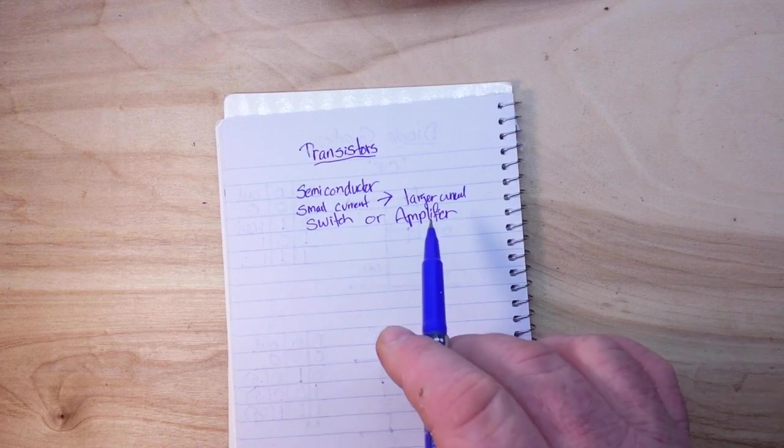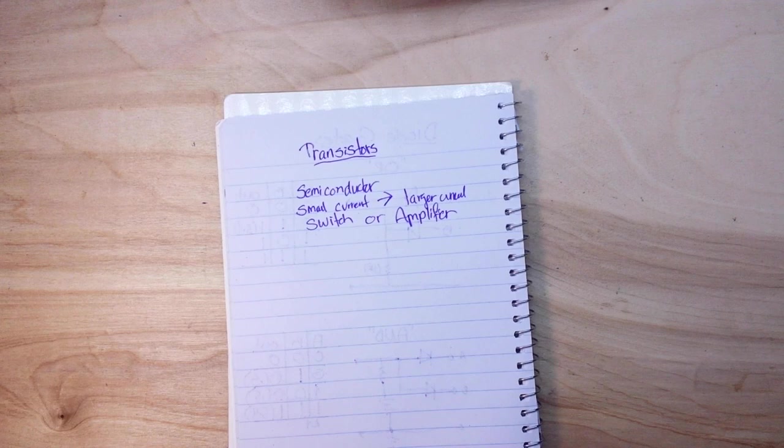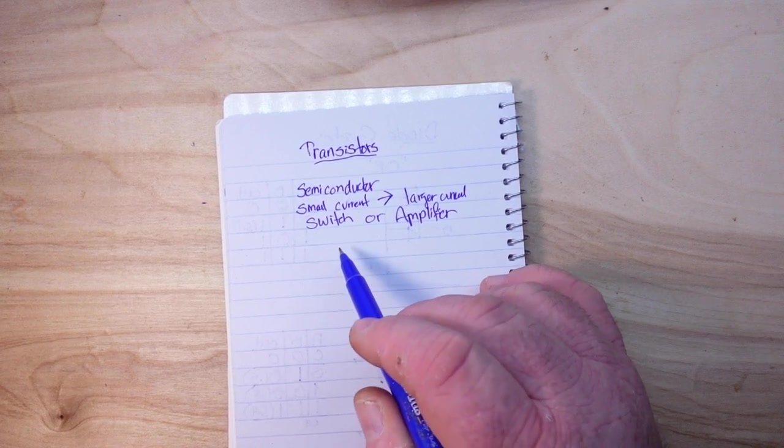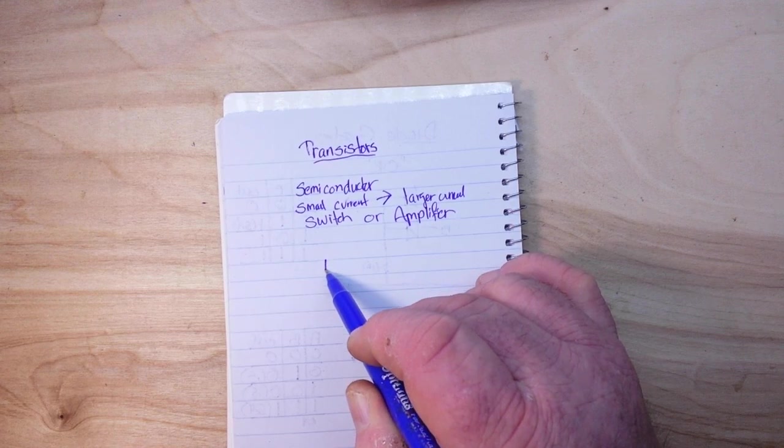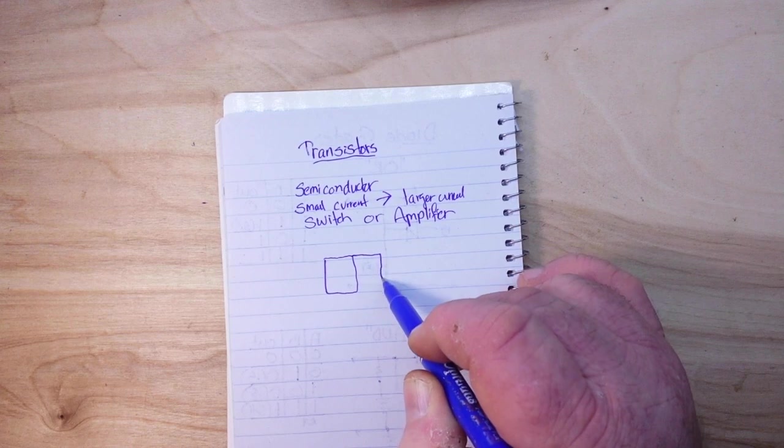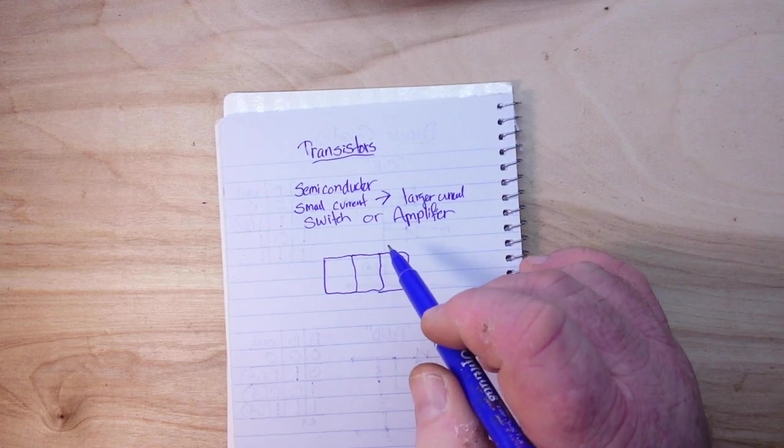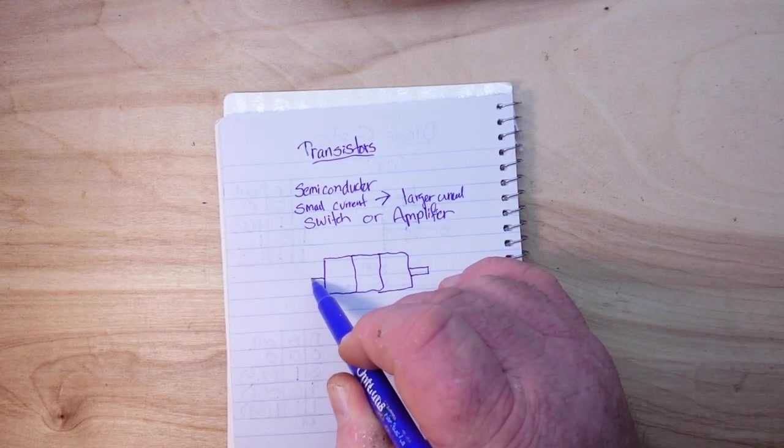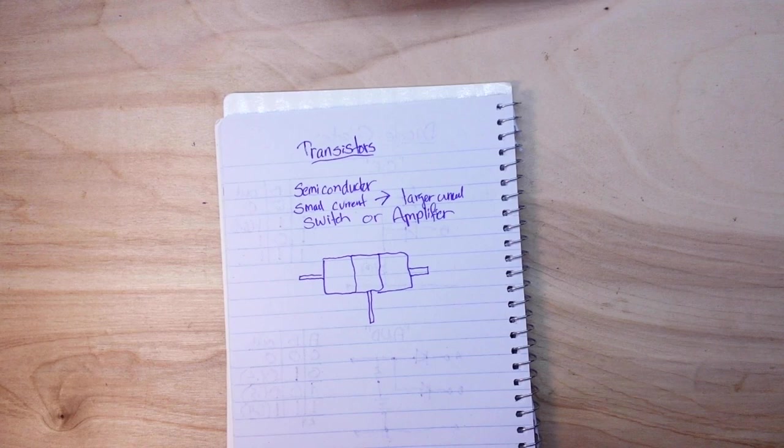The basics of all modern digital electronics are right here: the transistor as a switch or an amplifier. Now a transistor has three leads coming off of it, and if we draw the transistor, just bear with me on this drawing, I think you'll get to understand it here in a second.